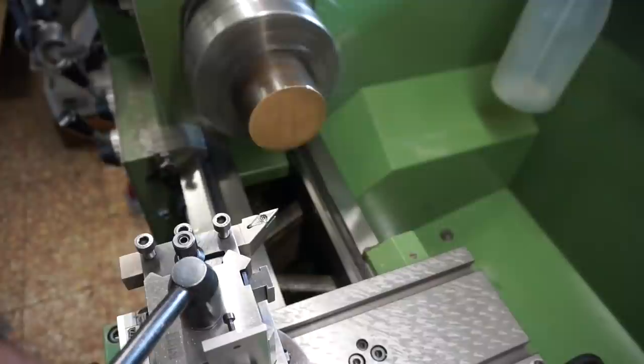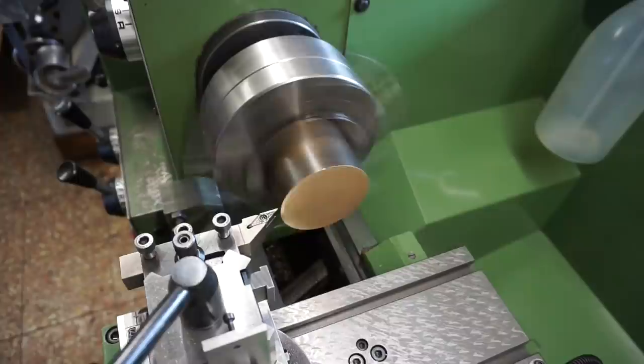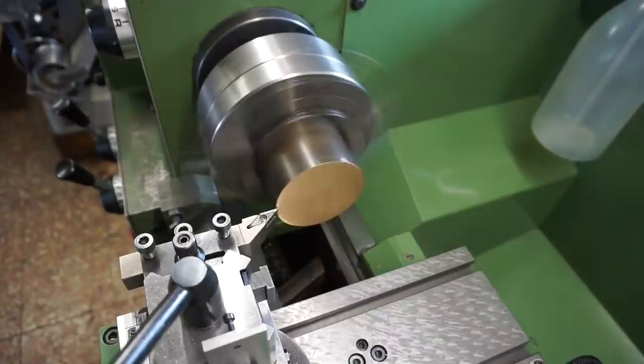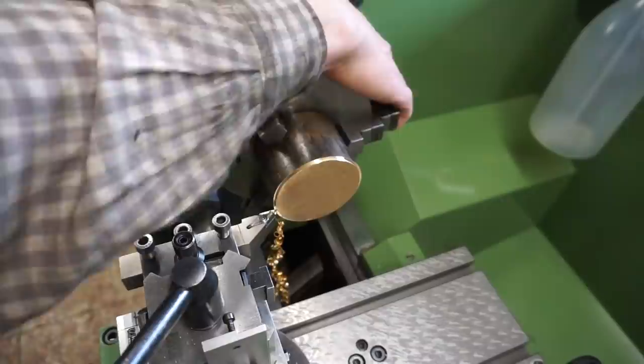So we start off with a pricey piece of bearing bronze. It's pricey all right since I had to buy two. Touching off on the blank diameter and setting the tool on the DRO. Starting roughing.